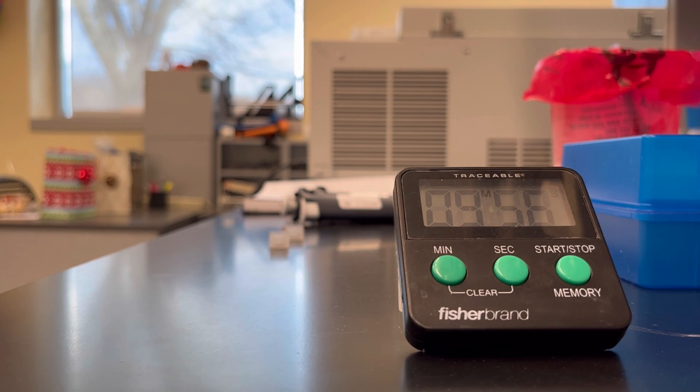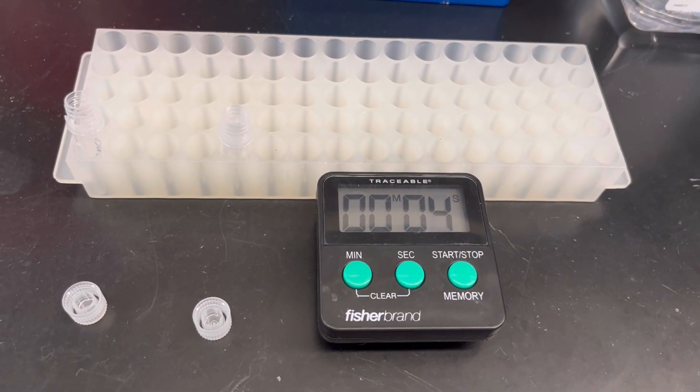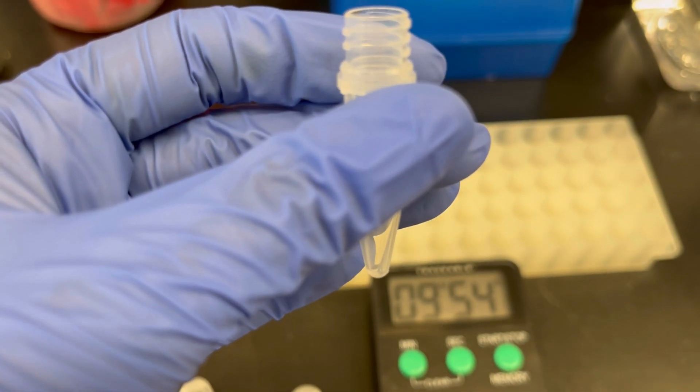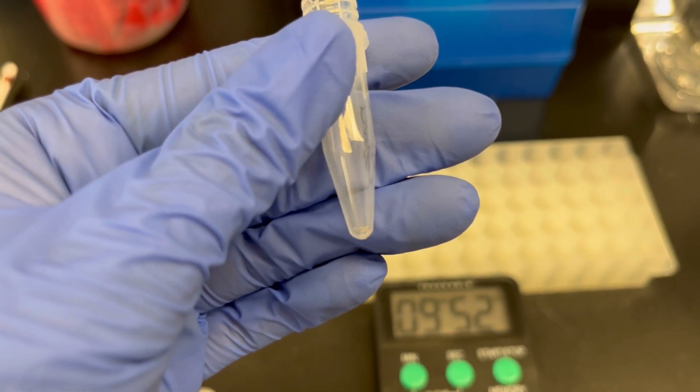Put the tubes down on the bench for 10 minutes with the cap open to dry out. As you can see, there is no ethanol left in the tube.